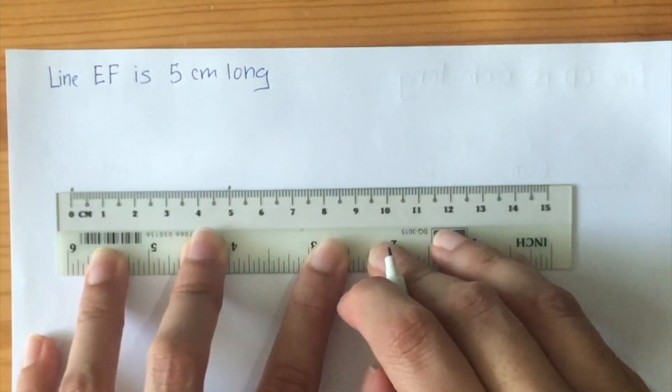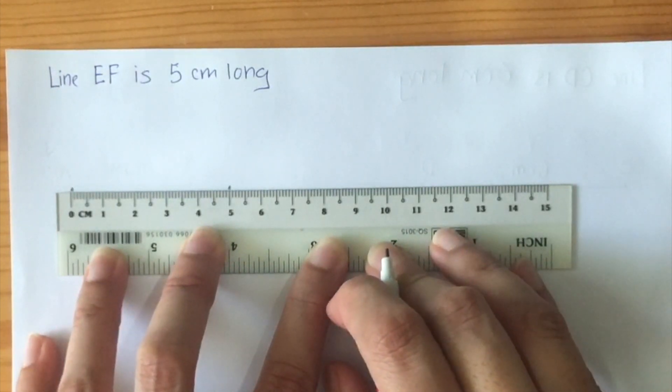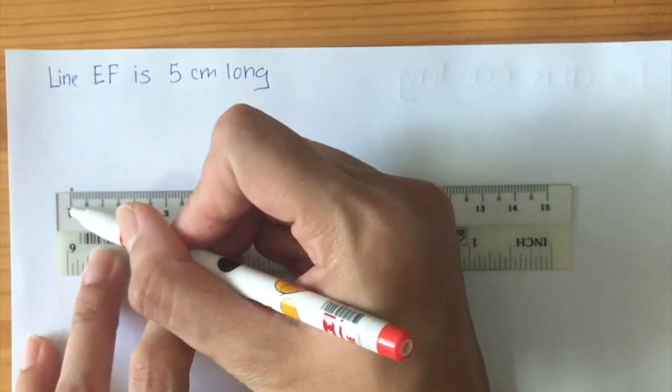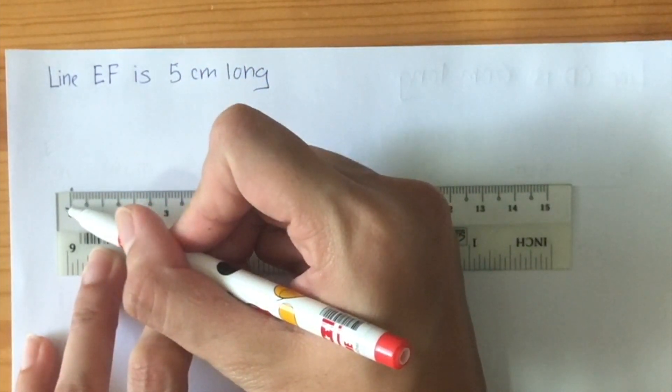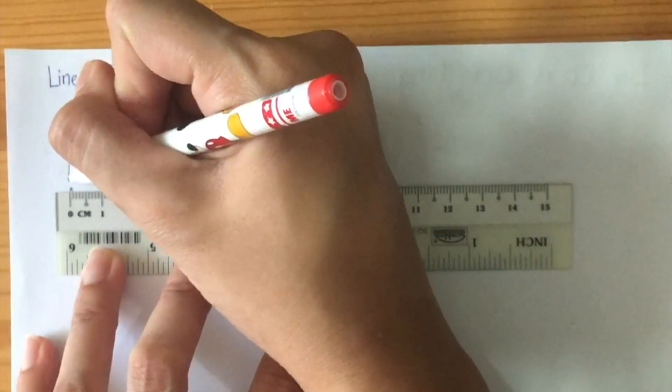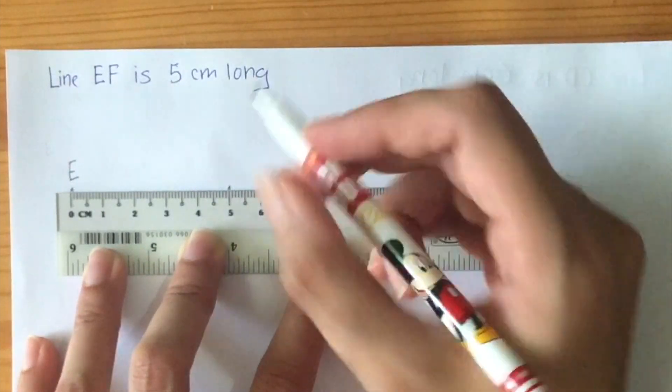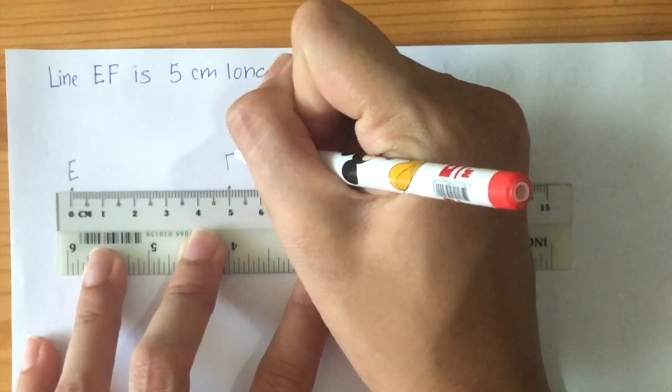Now once Miss Faiza has done this, Miss Faiza did not do something. What do you think I didn't do? That's right, I did not label it. So for my zero centimeter, Miss Faiza needs to label it E, and at the five centimeter Miss Faiza needs to label it as F.